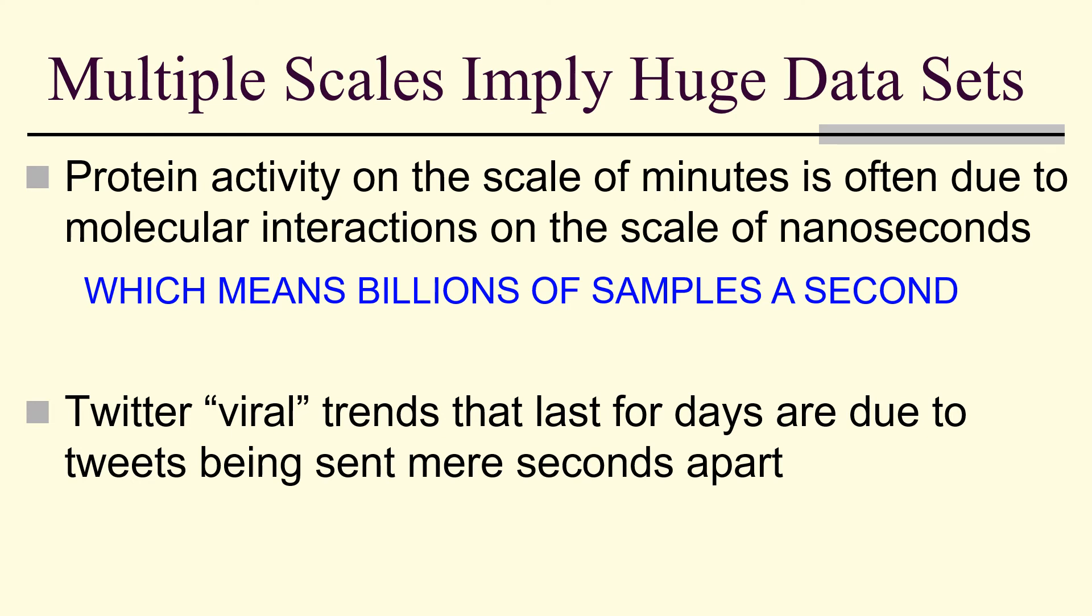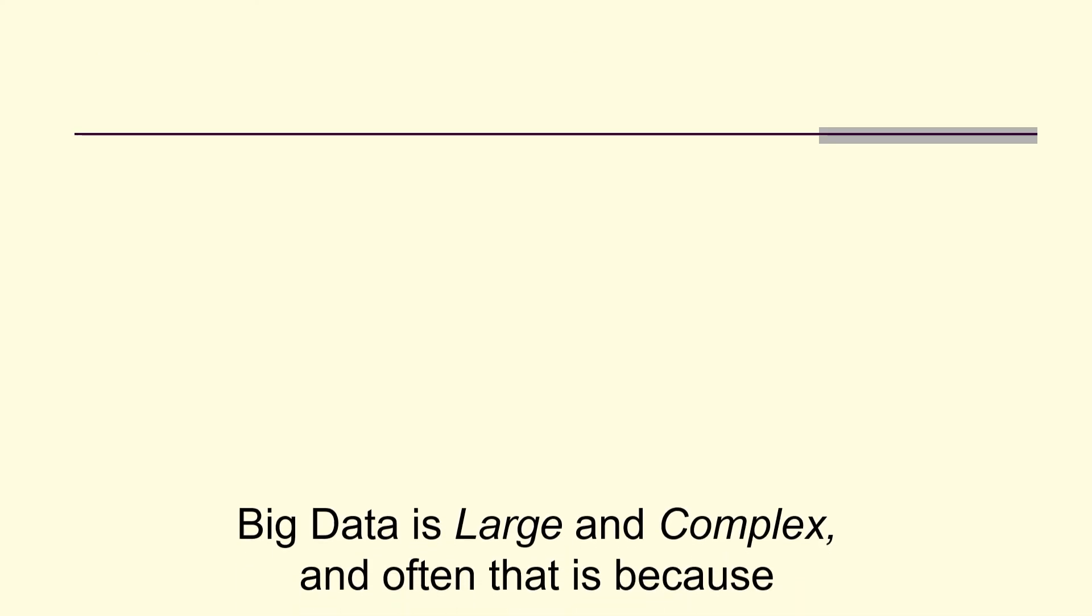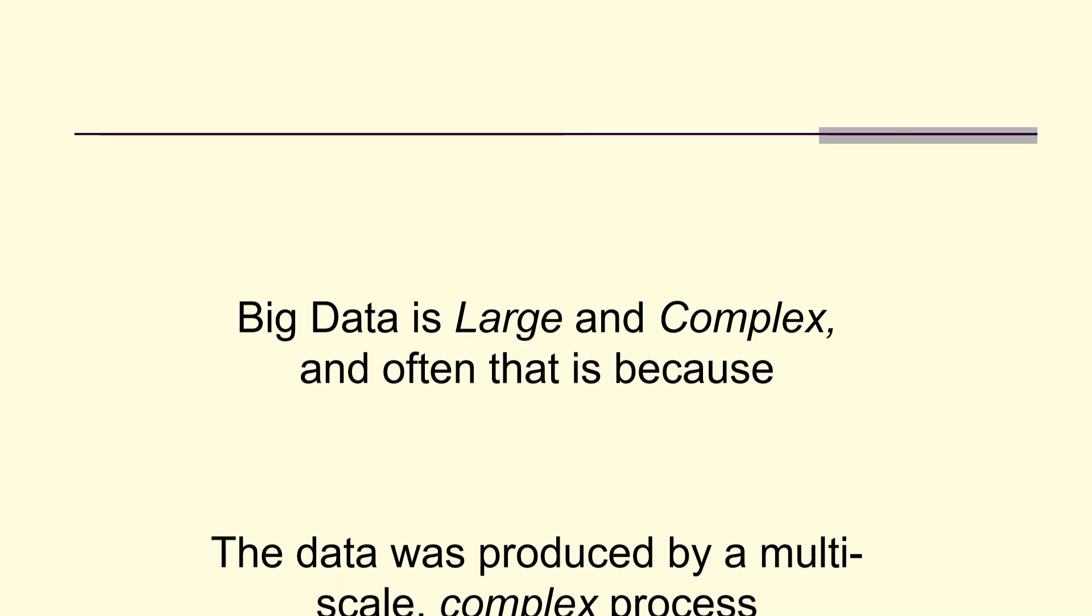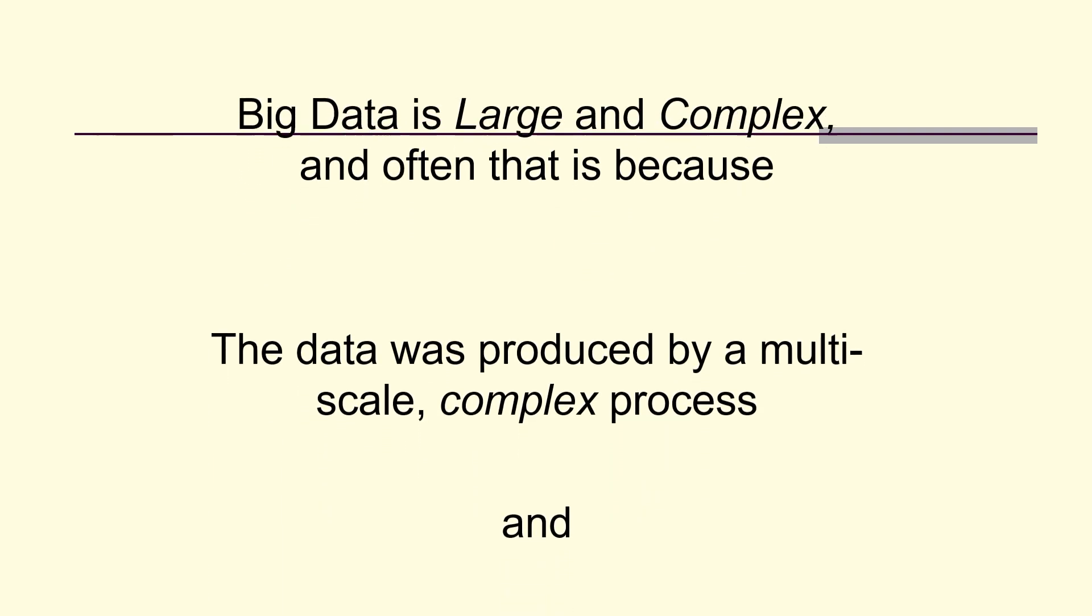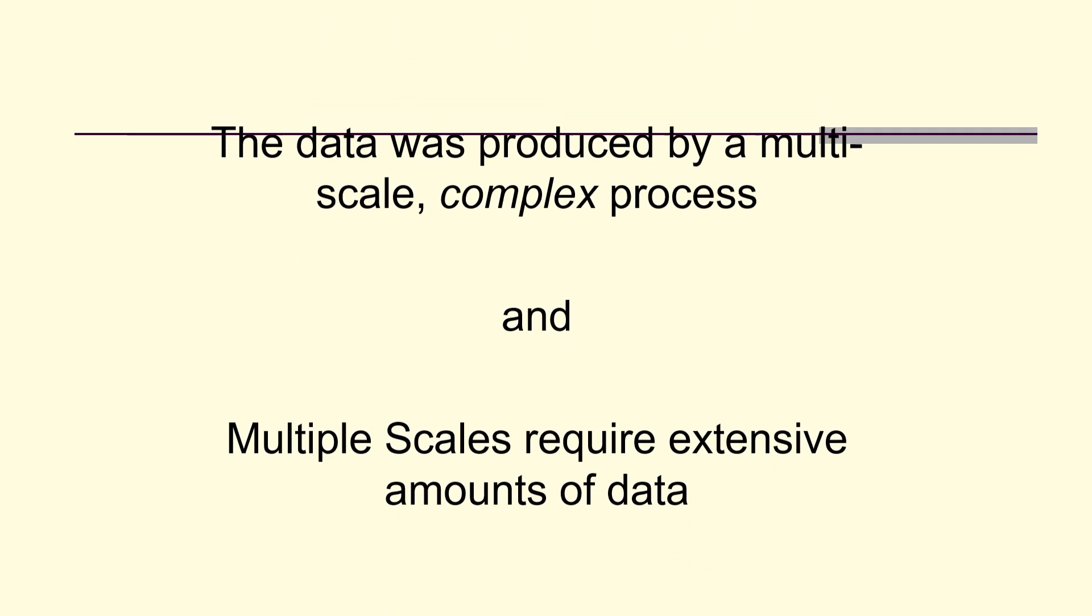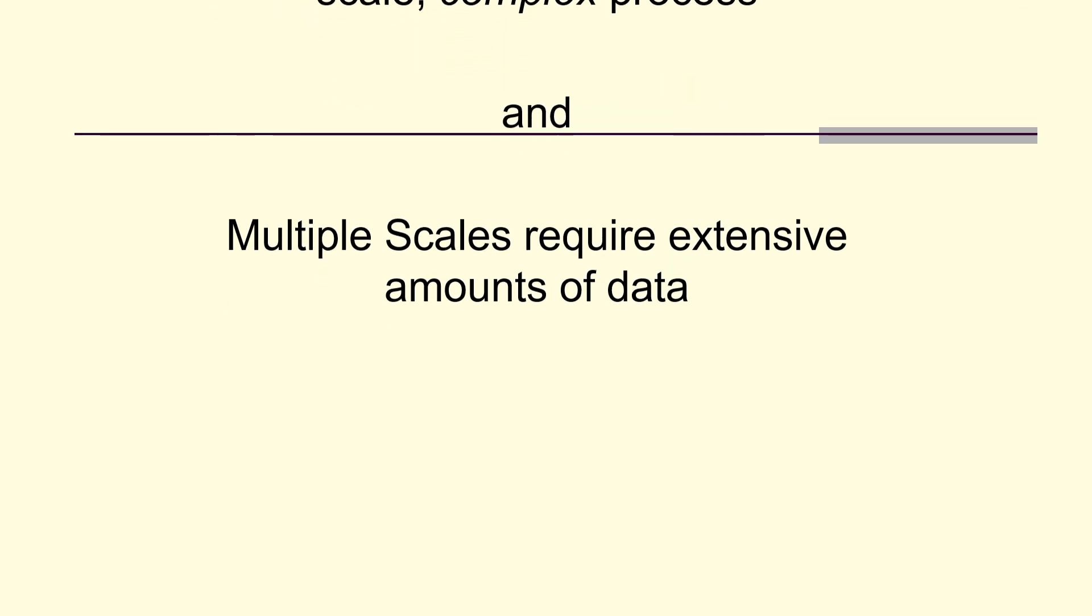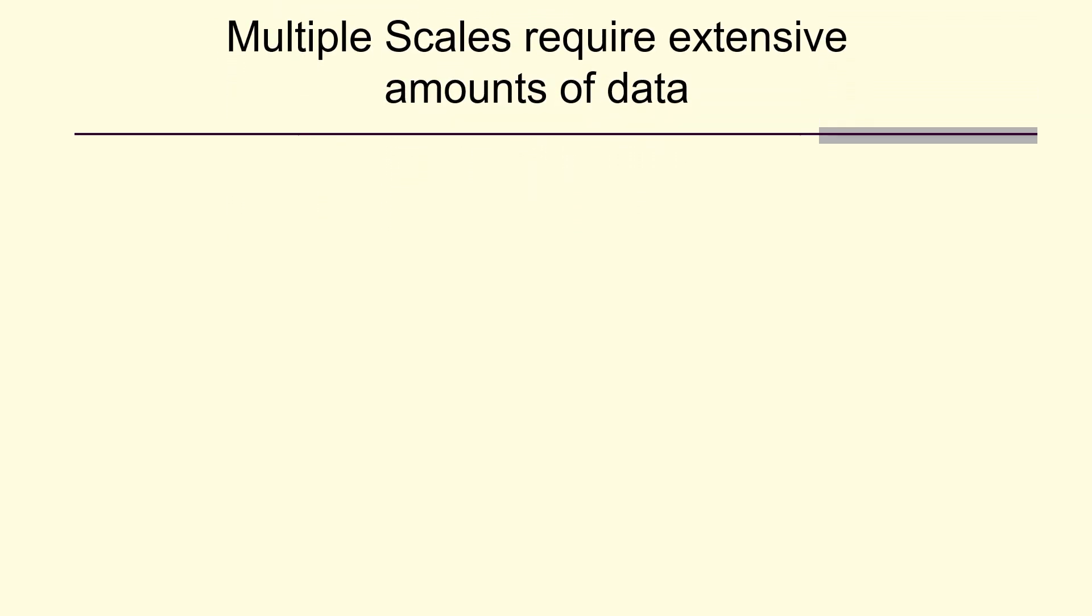Twitter viral trends last for days. But tweets can be sent mere seconds apart. We need a lot of tweets. In general, big data is large and complex because the data was produced by a multi-scale complex process. And multiple scales require extensive amounts of data.